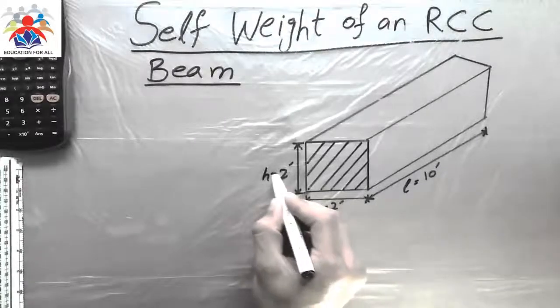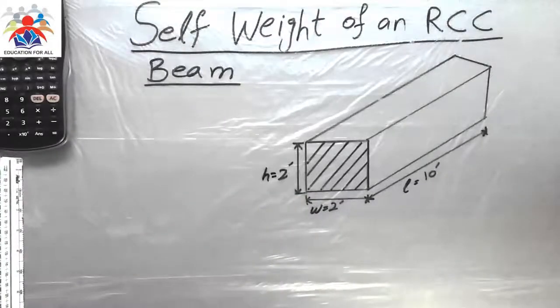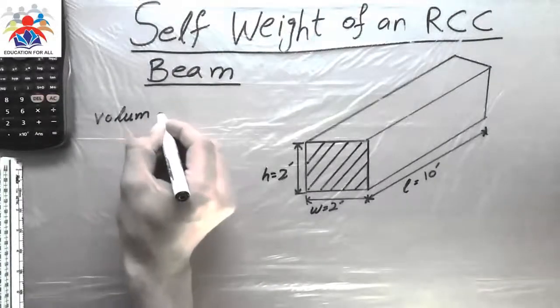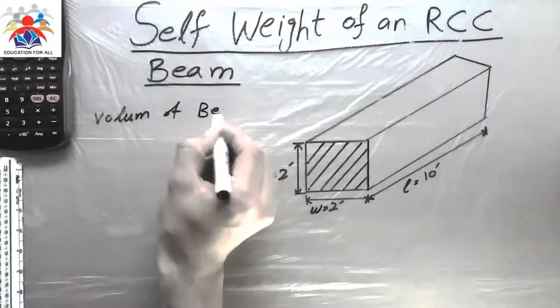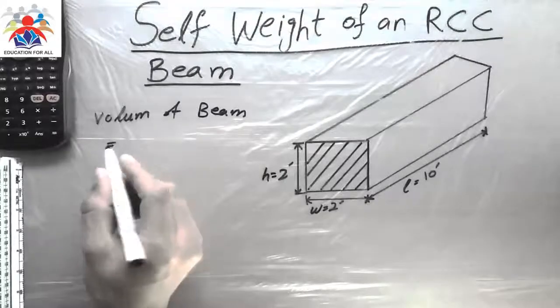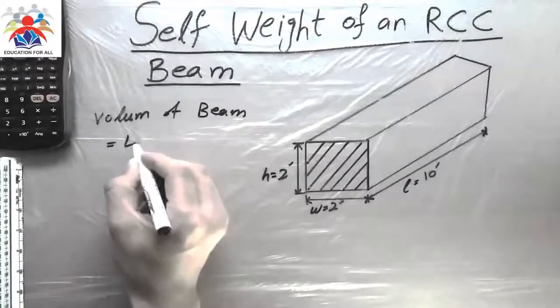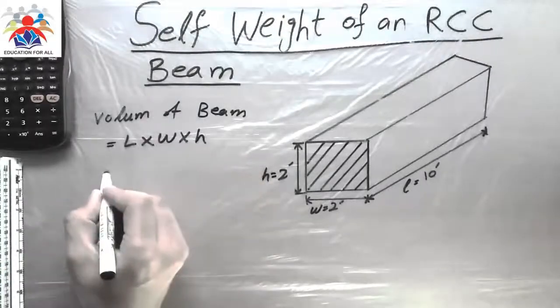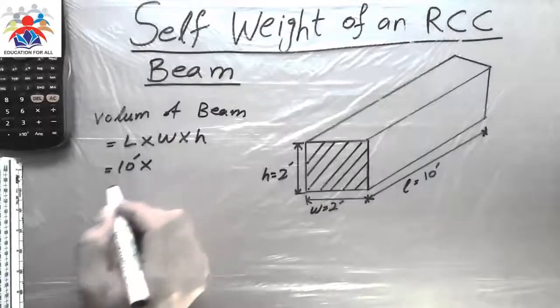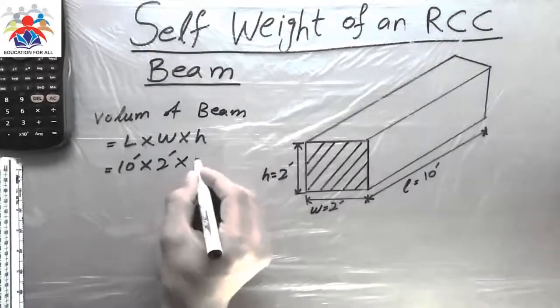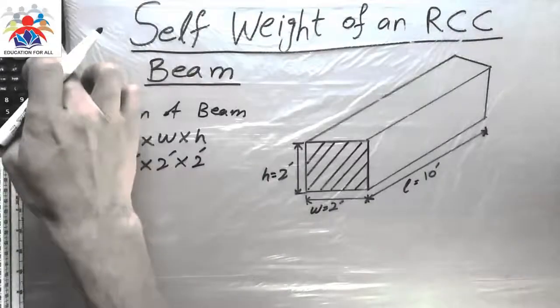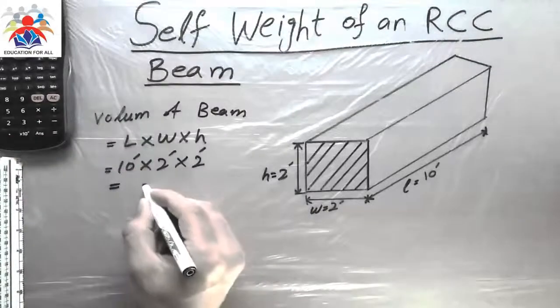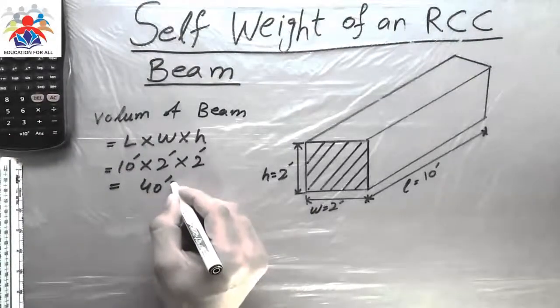First of all we have to calculate the volume of a beam. Volume of beam is length multiply by width multiply by height. Length we have ten feet, width we have two feet, and height we have two feet as well. So ten multiply by two multiply by two, we will get forty cubic feet.